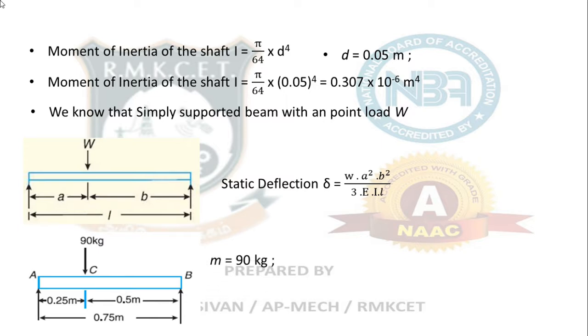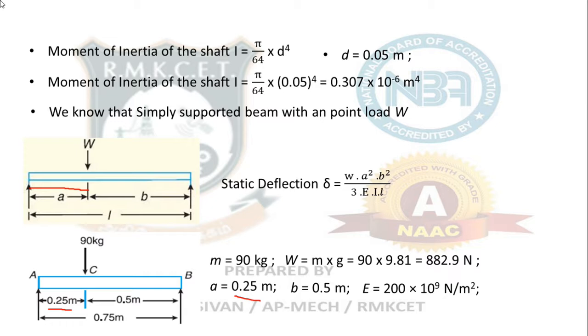m is 90 kg, find W from that 90 × 9.81 Newton. Then, a, if you look at the diagram above, first diagram. What is a? Here, a is the distance from left to the point load place. That is 0.25. Therefore, a is 0.25. b is remaining distance 0.5. Then, Young's modulus is 200 × 10⁹. Length, I mean, moment of inertia is 0.307 and length is 0.75.